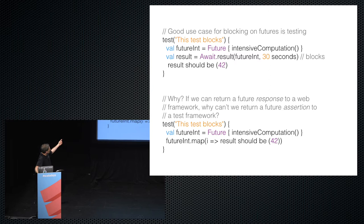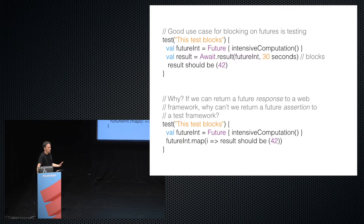So it would look like this: instead of doing a blocking call on the future, getting the result back, asserting, and being finished, you just map the assertion onto the future you have. It's very much like Play mapping a response. That seemed mildly interesting, but not clearly useful. And if something's not useful, it shouldn't go in the library because the library is already too big — everything has to be worth it.